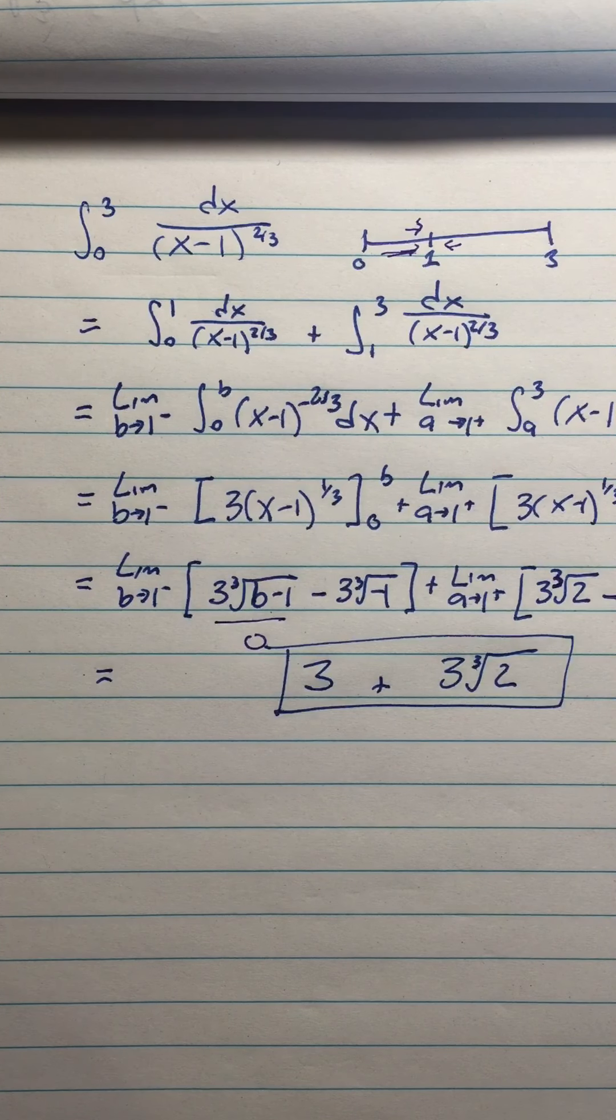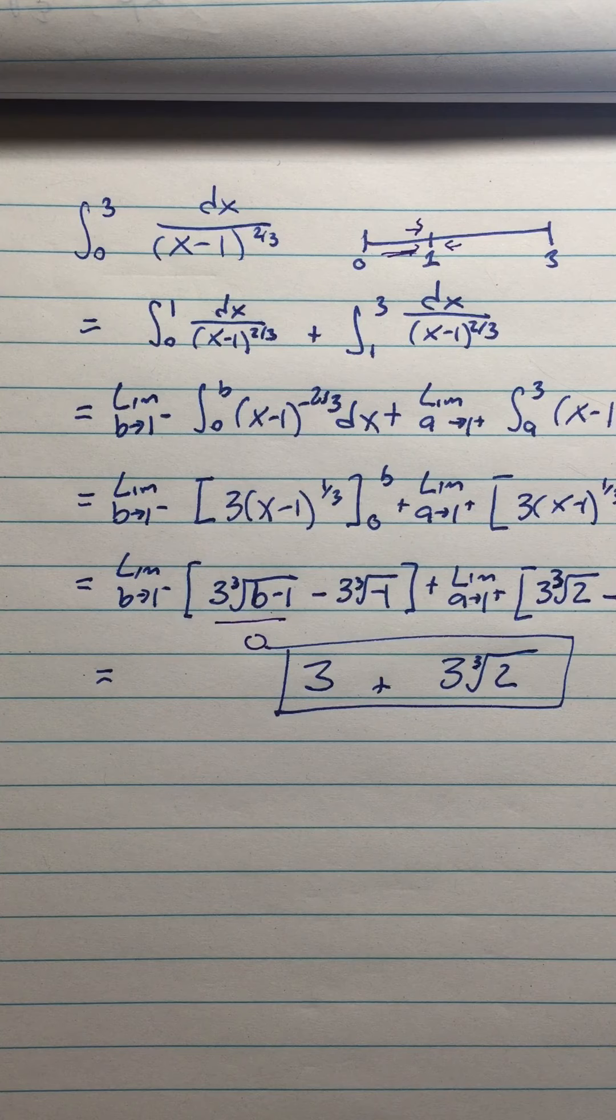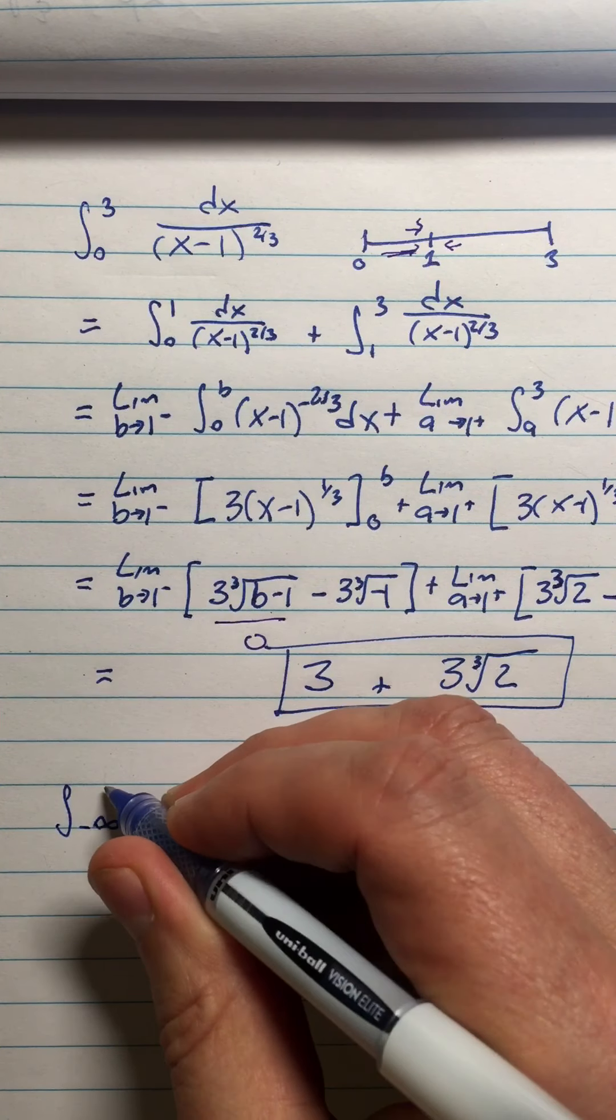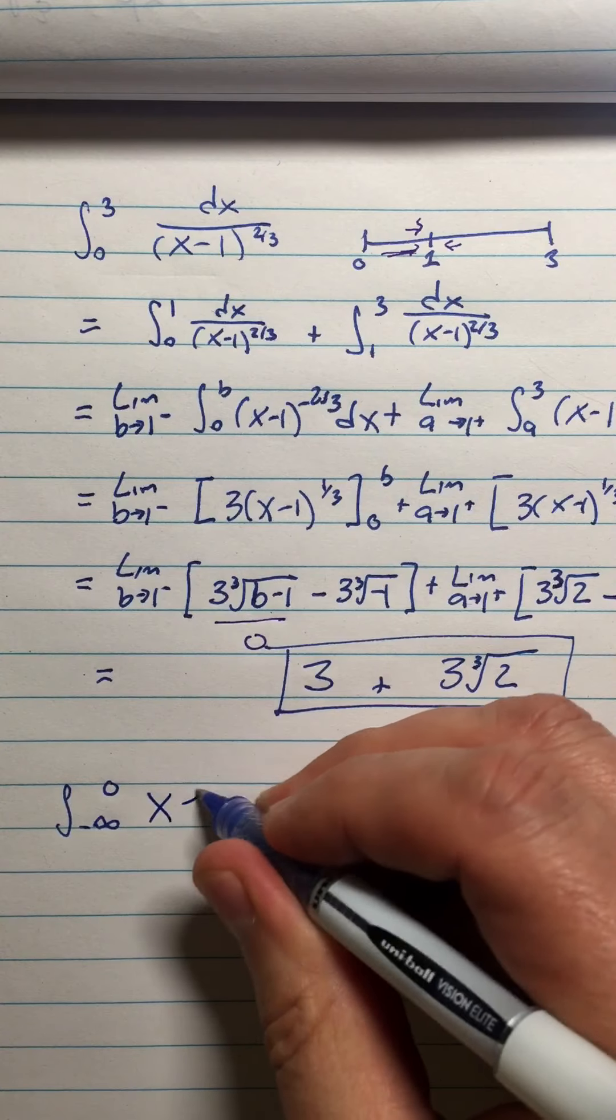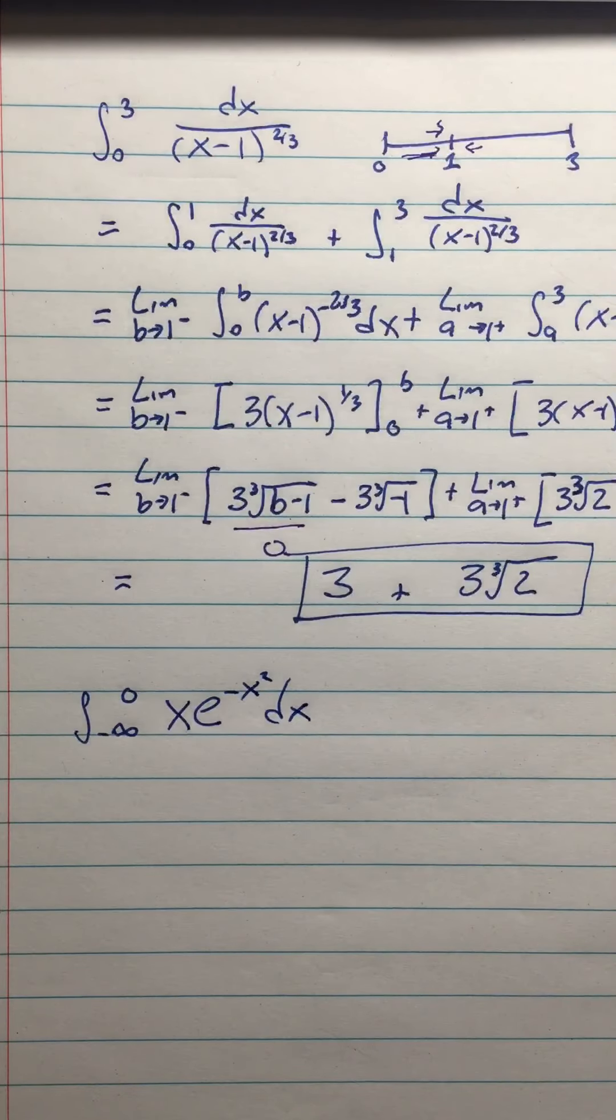What else are we going to do? We're up to 6 minutes, I guess. We'll save the next one for... I guess I wanted to do sort of an interesting one. I'll give you one to do. You guys should try to do the integral from negative infinity to 0 of x*e^(-x^2) dx. Just try that as an example.